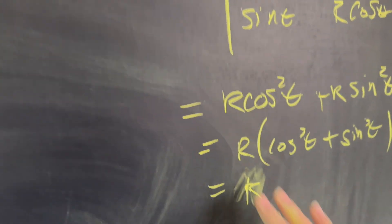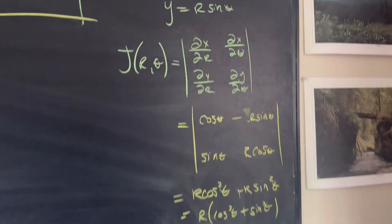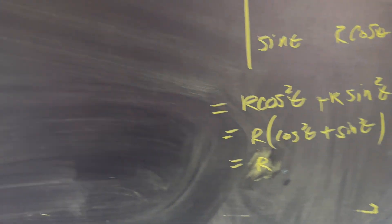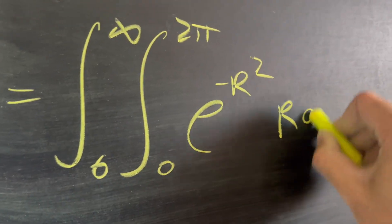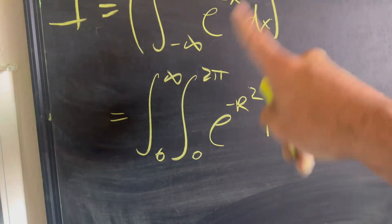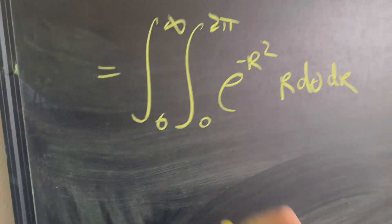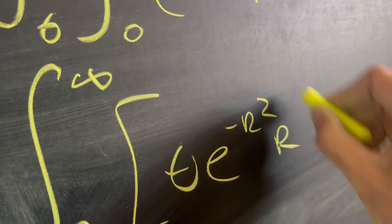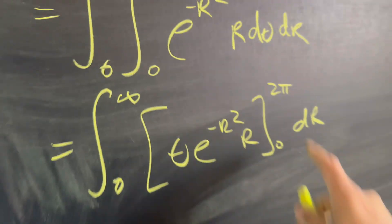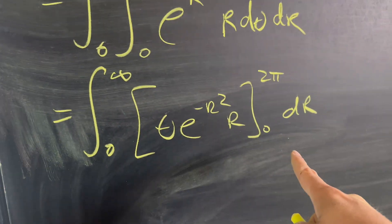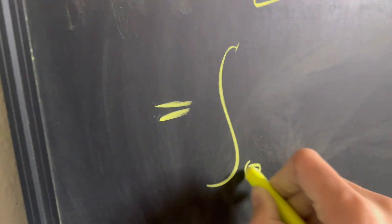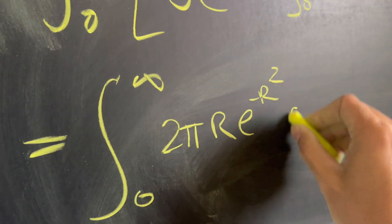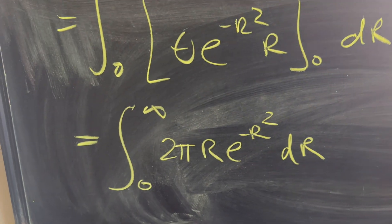Now we know every sector stretches by a factor of r, so we include the Jacobian r, giving us r d theta dr. Taking the integral with respect to theta first, we get theta times e to the negative r squared times r, evaluated from 0 to 2 pi dr. Plugging in 2 pi gives 2 pi, and plugging in 0 gives 0. So we now have the integral from 0 to infinity of 2 pi times r e to the negative r squared dr.